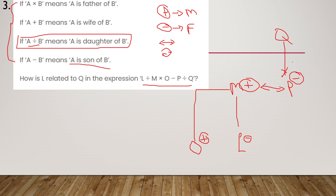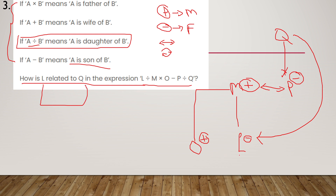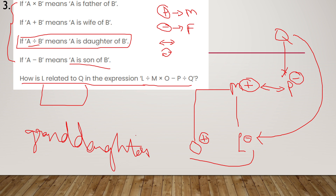So now they have asked how L is related to Q. Looking at the relationships built out, Q is a grandparent — we don't know whether male or female, so we cannot say grandmother or grandfather. But since L is female and both O and L are grandchildren of Q, we can say that L is the granddaughter of Q.